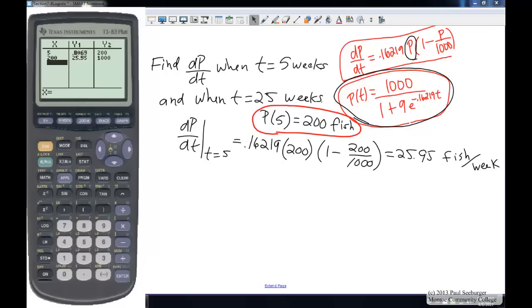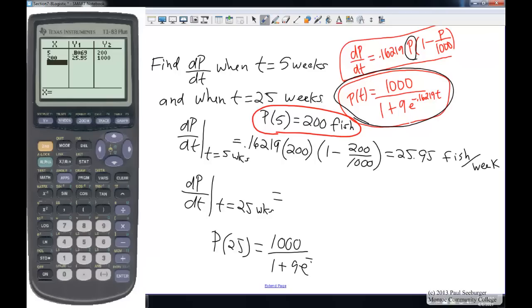Now the other piece of information that we want to find out here is, what is dp/dt when t equals 25 weeks? Well, in order to find that out, we want to know what the population is after 25 weeks. So we've got p of 25, of course we could plug it into our formula here, it wouldn't be that hard. 1,000 over 1 plus 9e to the negative .16219 times 25.